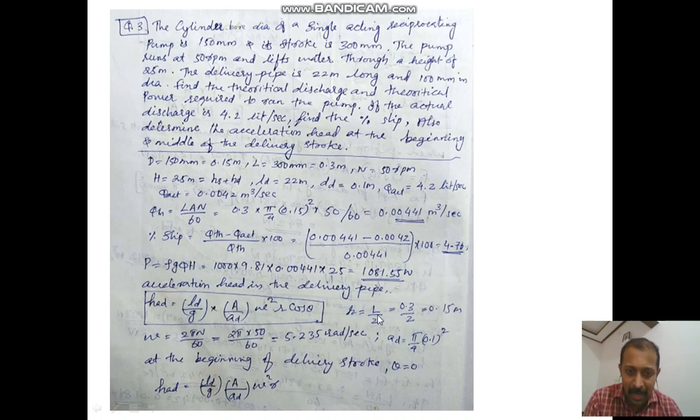We know the length of stroke L equals 2r, so r equals L by 2. We got r as 0.15 meters. Omega is 2 pi N by 60, that is 5.235 radians per second. Area Ad is pi by 4 d squared. dd is given as 0.1, so 0.1 squared.